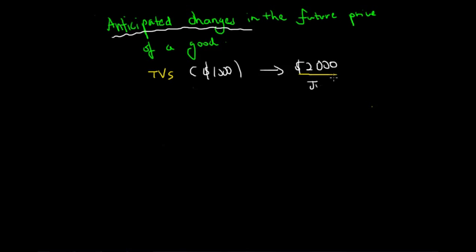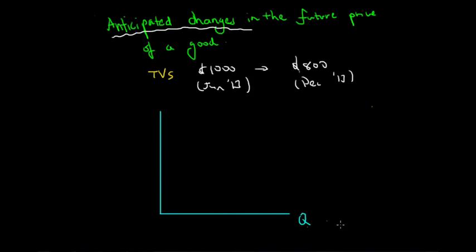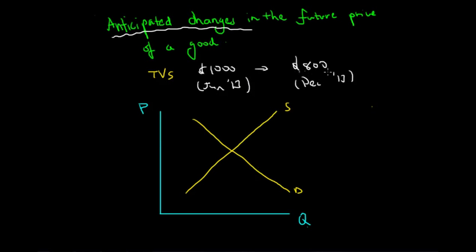This also relates to the concept of deflation. Currently a TV is $1,000, and we expect it to decrease to $800 by June 2013 — so in six months the TV will be $200 cheaper. Because a TV is not a necessity and we can wait six months to save $200, as rational consumers seeking minimum costs, the demand for TVs now will be lower because we expect the price to decrease to $800.